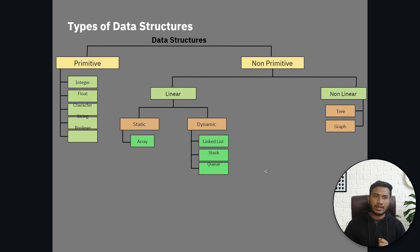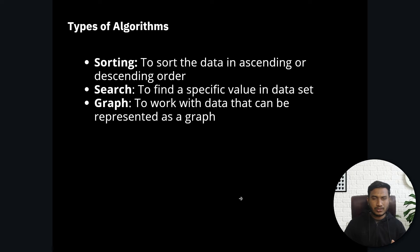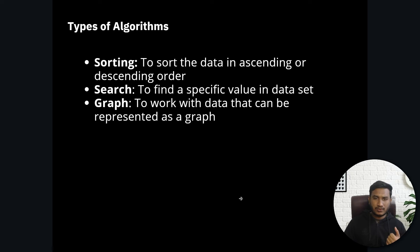This is all about types of data structure. Now let's discuss types of algorithms. There are various types of algorithms. There is a sorting algorithm — a sorting algorithm sorts data in ascending or descending order. We have bubble sort, merge sort, selection sort and so on. Then we have a search algorithm — a search algorithm finds a specific value in a data set. We have binary search, linear search, and different search algorithms.